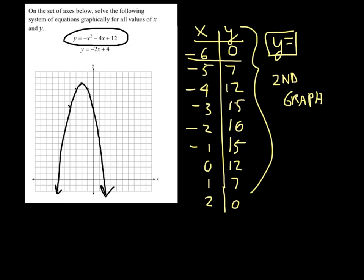Alright, so in graphing those points, I get the parabola that looks like that. Like I said, a frown. And now I just have to finish off by graphing the second part of it, which is that linear equation.